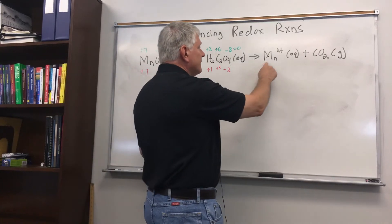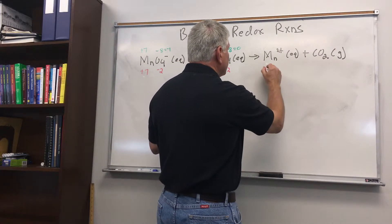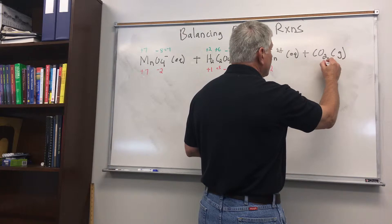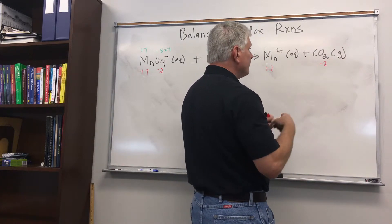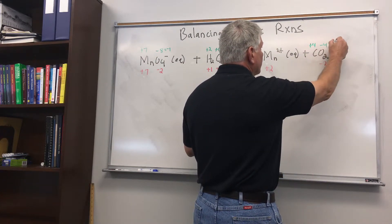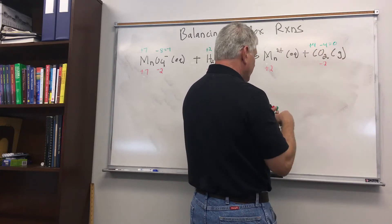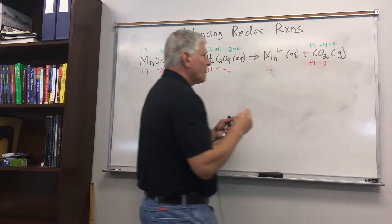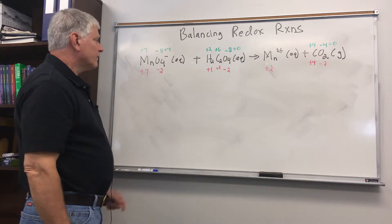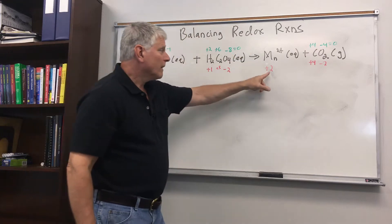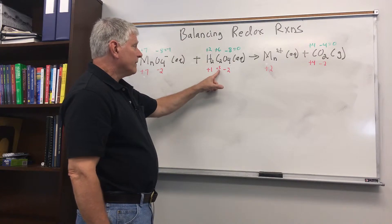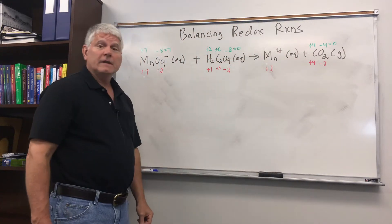Now we go to manganese — it's an atom, so its oxidation state is just its charge. And here we have carbon dioxide: each oxygen is negative 2, giving a total of negative 4 for the oxygens, so carbon has to be plus 4. Now we can see which atoms have gained and lost electrons. Manganese has gone from plus 7 to plus 2, so it has gained 5 electrons. Carbon has gone from plus 3 to plus 4, so it has lost an electron.